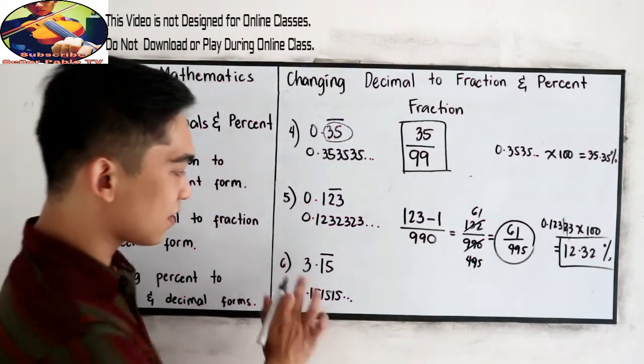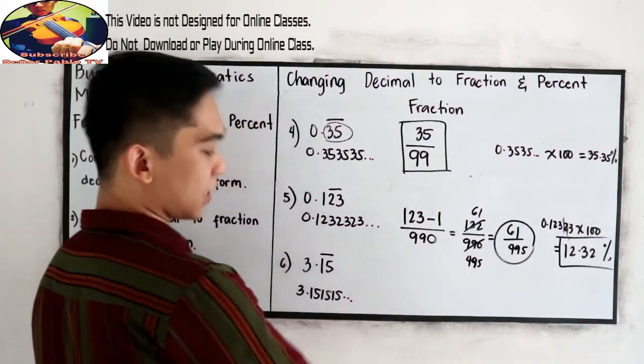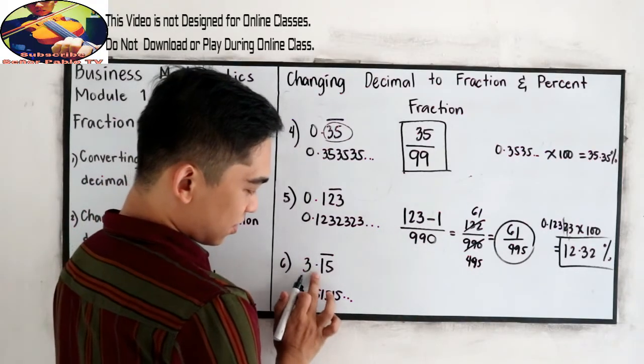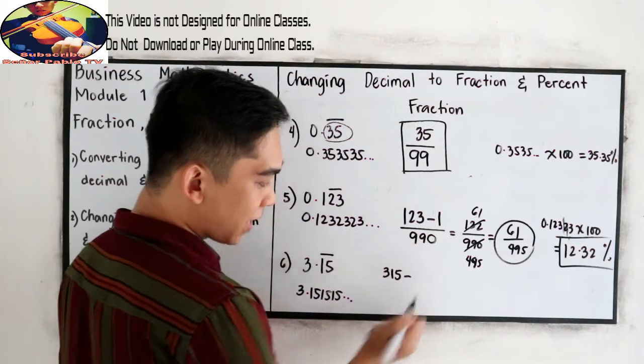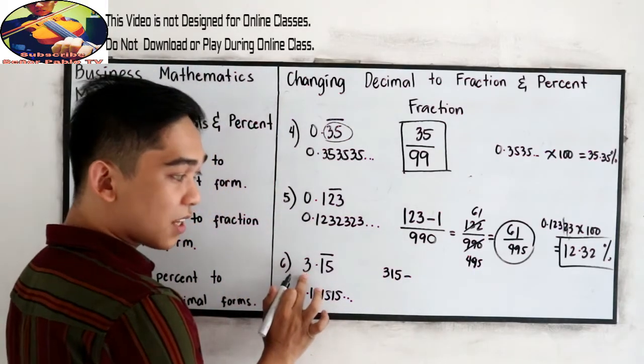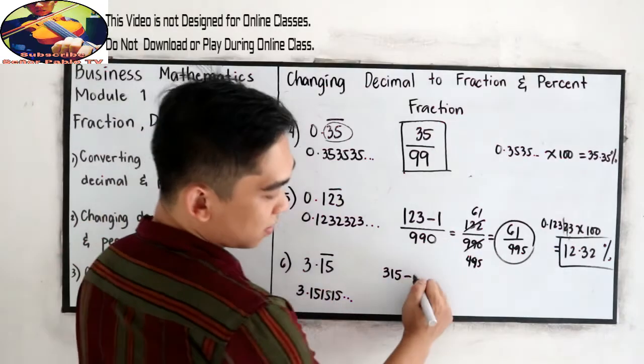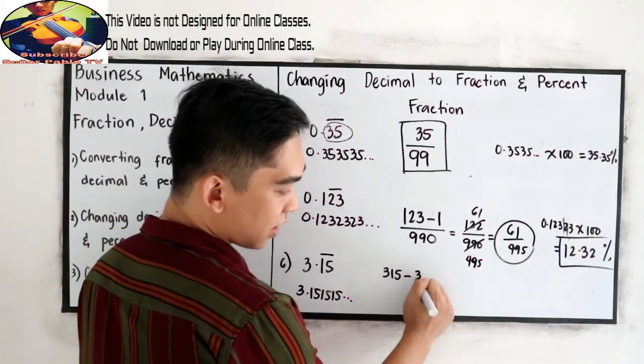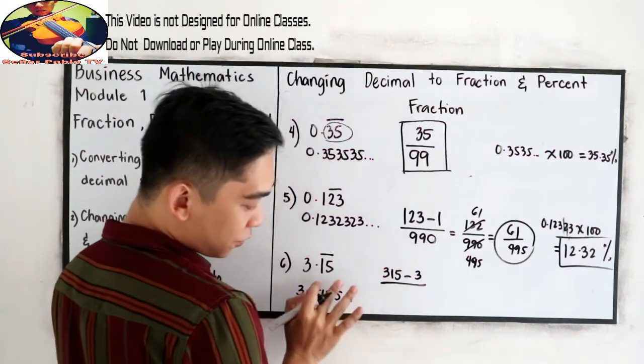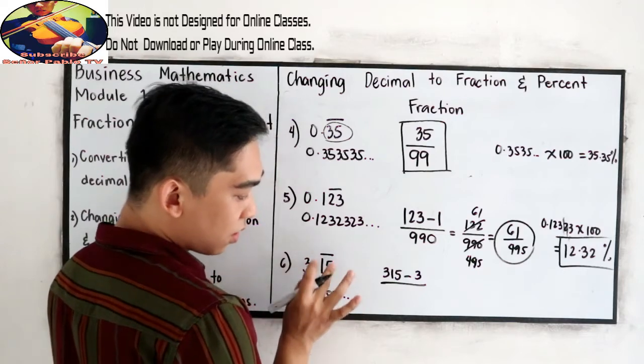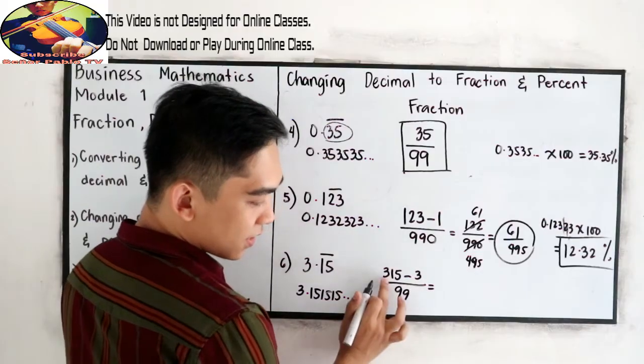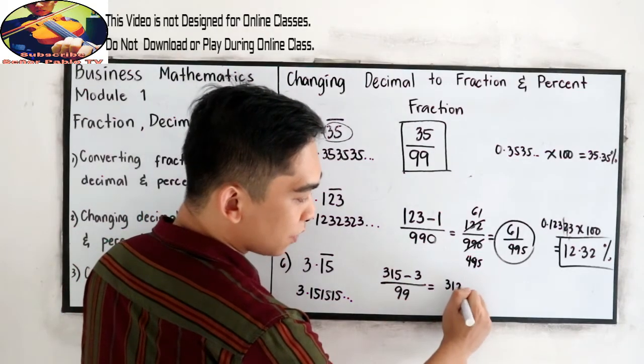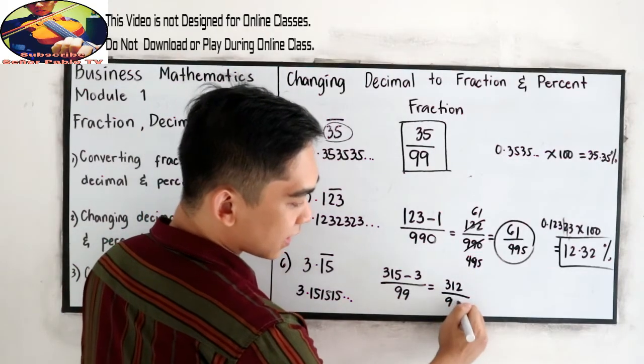And last, 3.15, 15, 15, 15. So copy, 315 minus, 3 is not included in our fraction bar. So subtract 3 over, we have two decimal places and all are included in fraction bar. So 99. So we have 312 over 99.